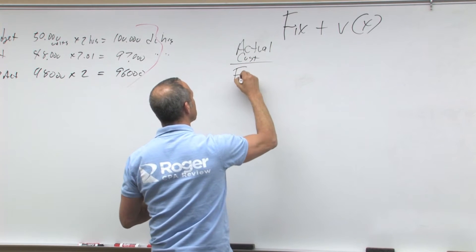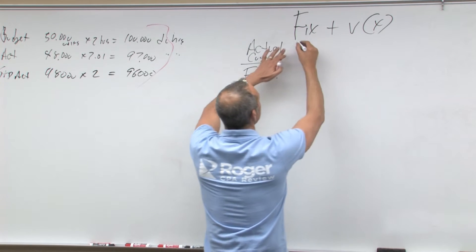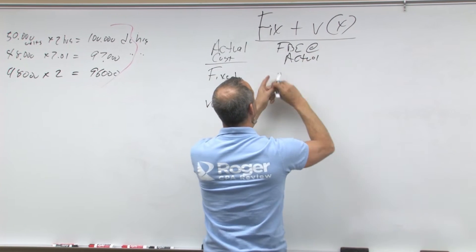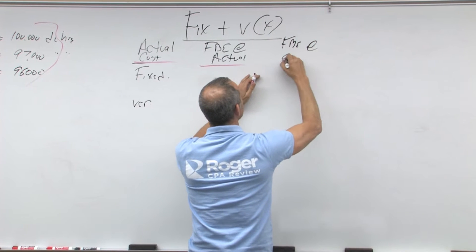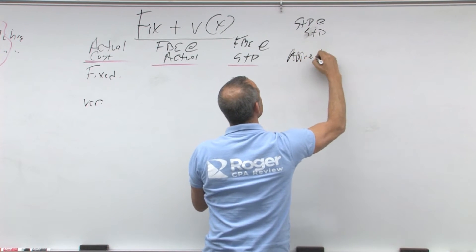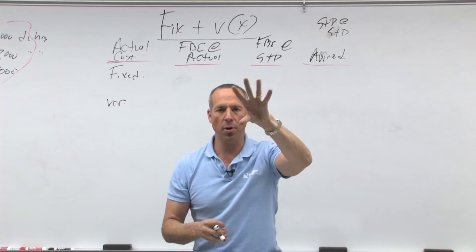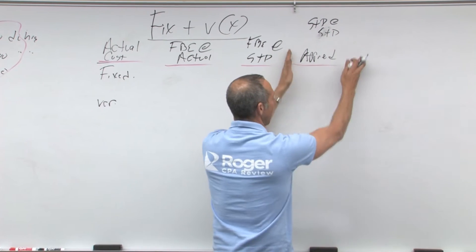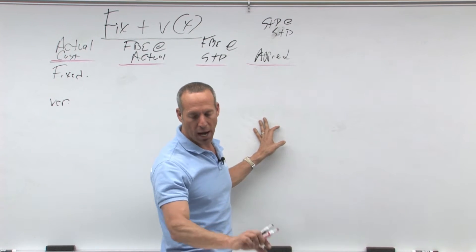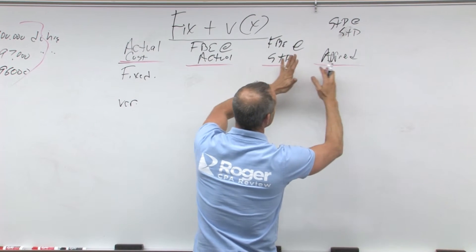The actual cost will have our fixed and our variable. Then we're going to have our flexible budget equation. The flexible budget, since it's close to actual, will be the flexible budget equation at actual. Then we'll have our flexible budget equation at standard, and then standard at standard, which is basically what got applied into production. Overhead was applied — that's what got applied based on our predetermined overhead rates. So these four columns are: actual at actual, flexible budget at actual, flexible budget at standard, and what got applied into production.